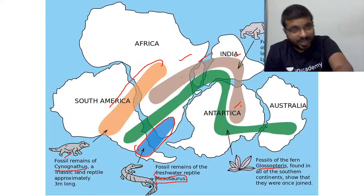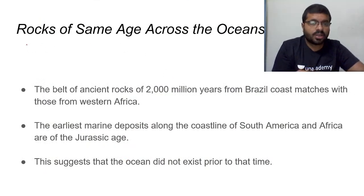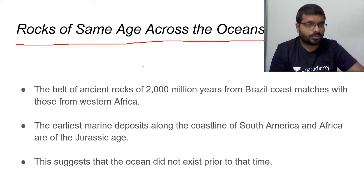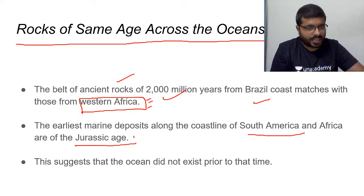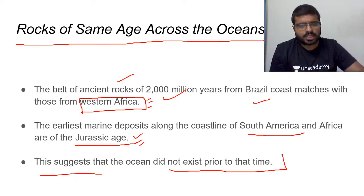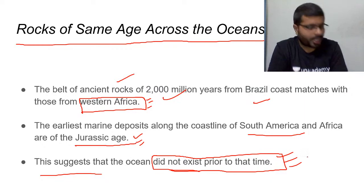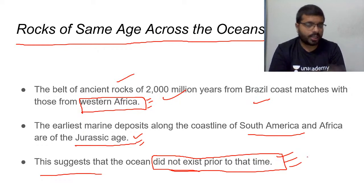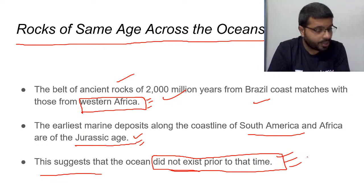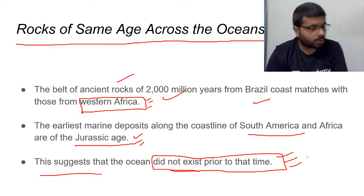There is one more evidence: rocks of the same age across oceans. The belt of ancient rocks aged 2000 million years from the Brazilian coast matches with those of western Africa. Also, the earliest marine deposits along the coastlines of South America and Africa are of Jurassic age, suggesting the Atlantic Ocean did not exist prior to that time — the continents were joined.